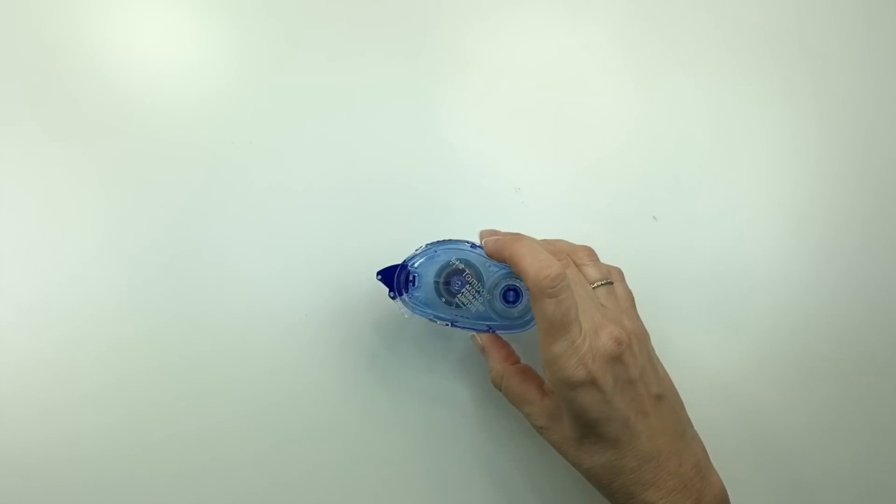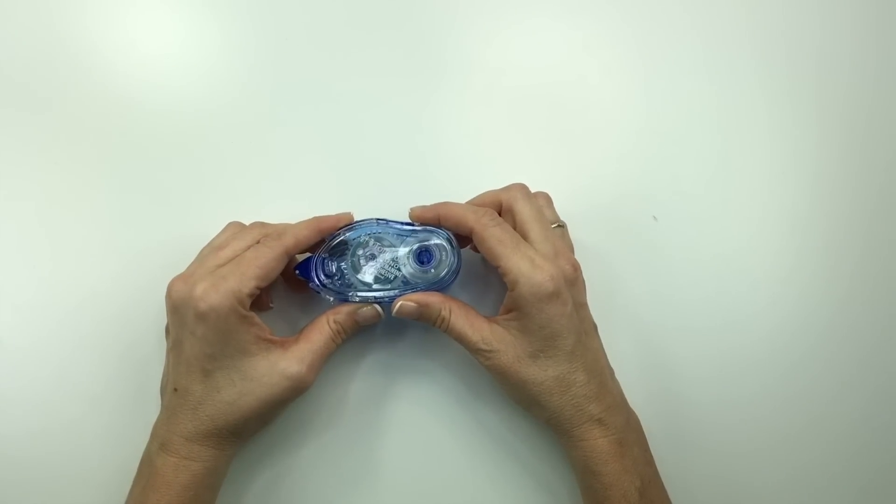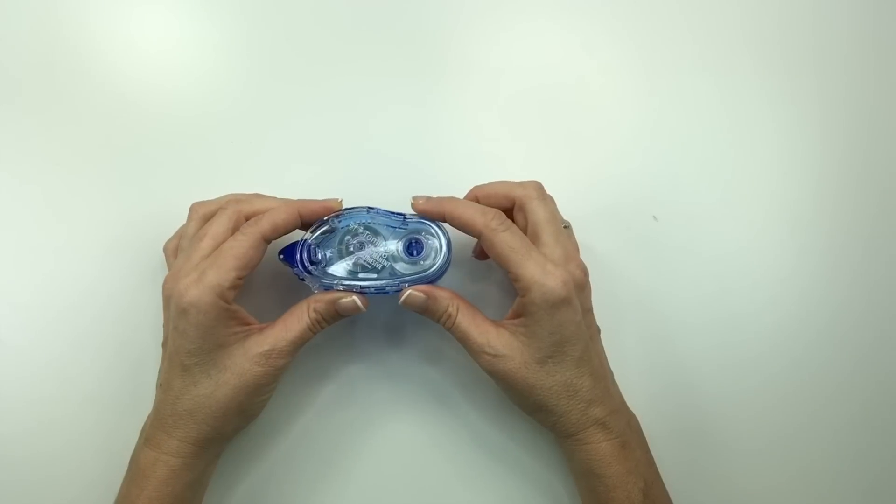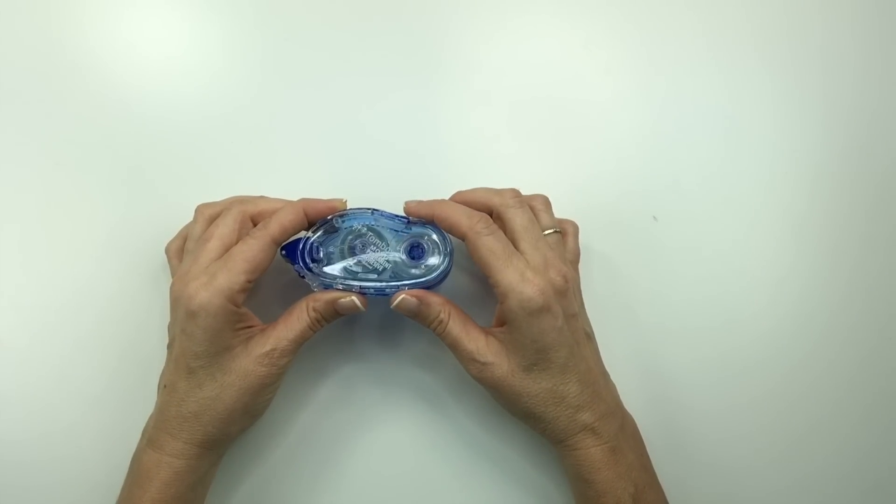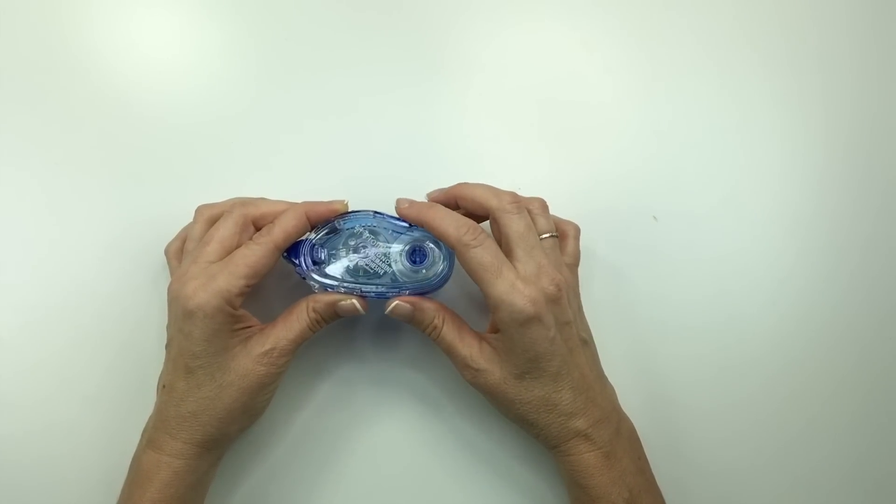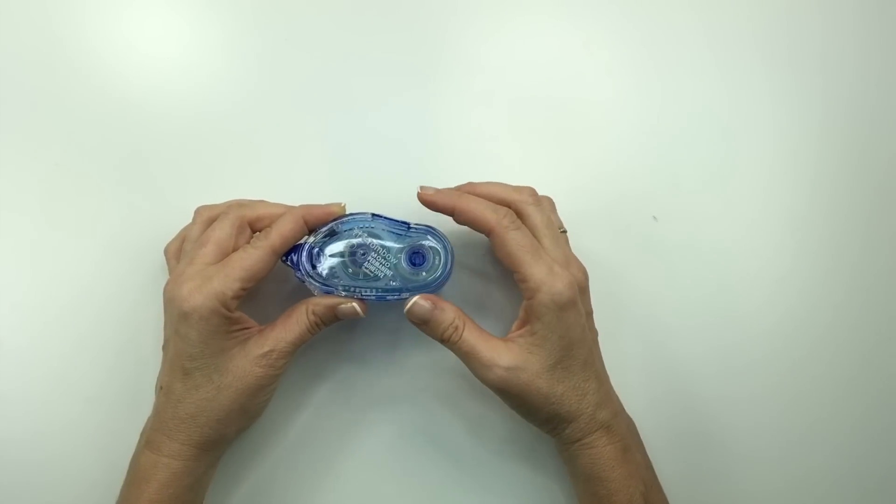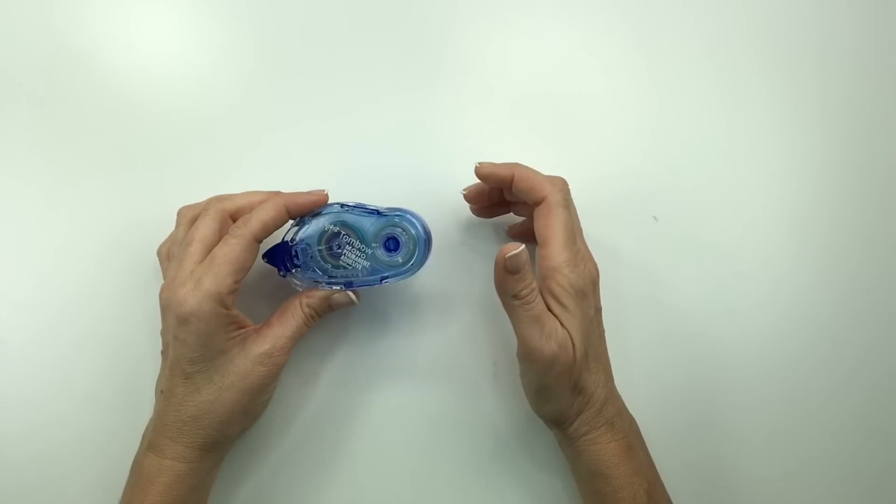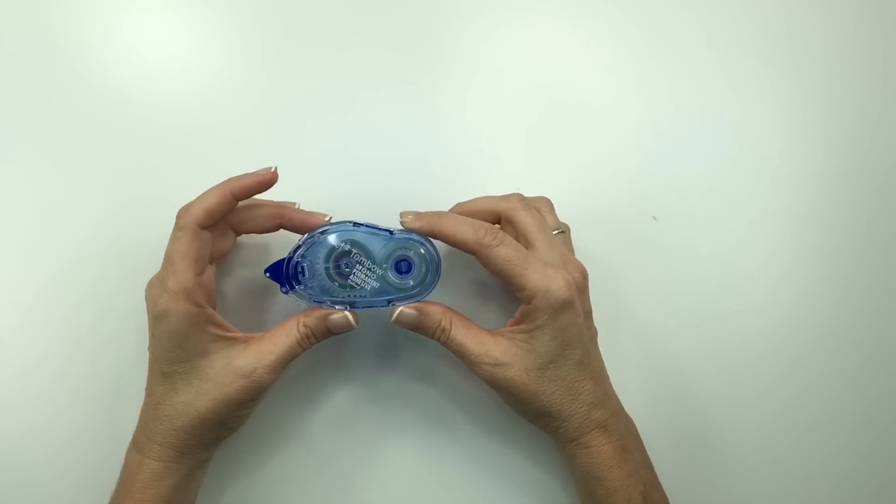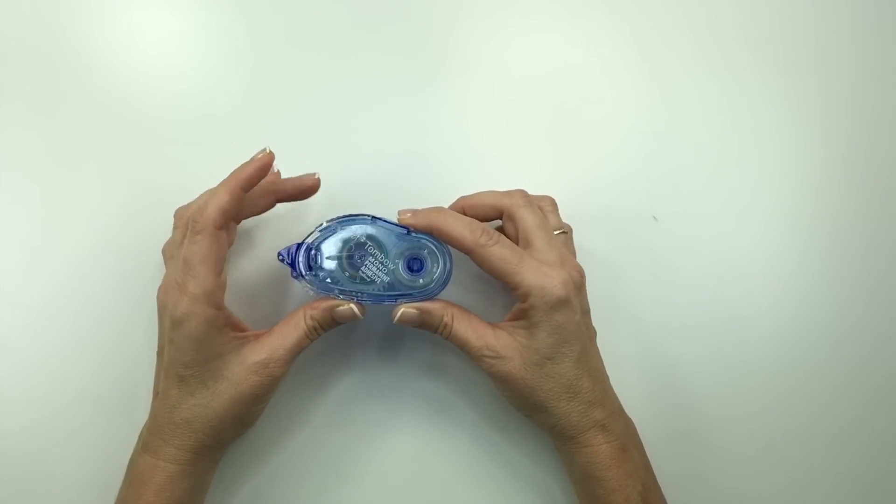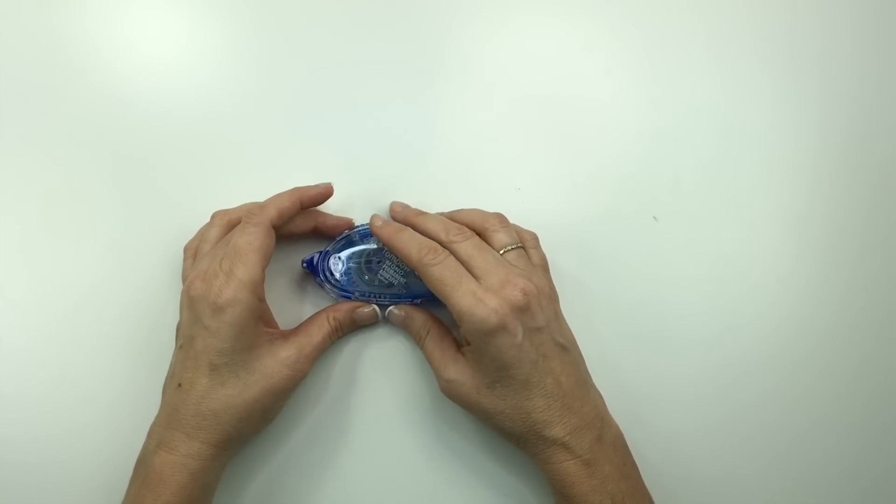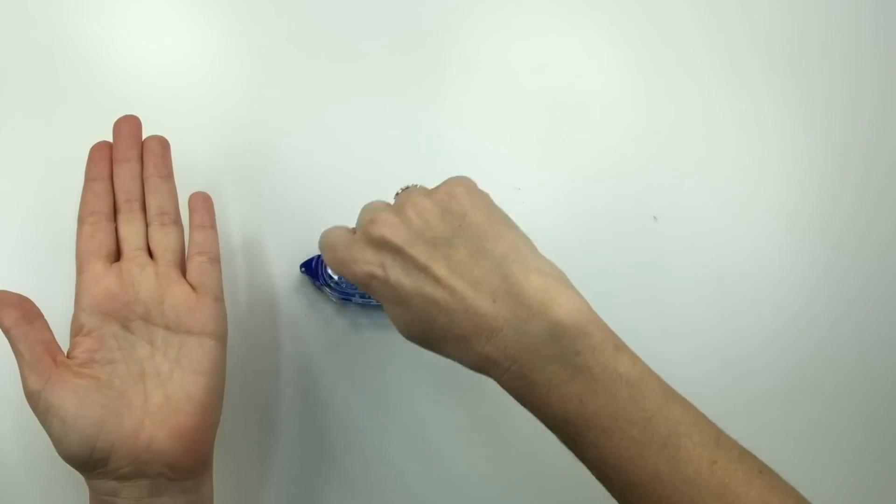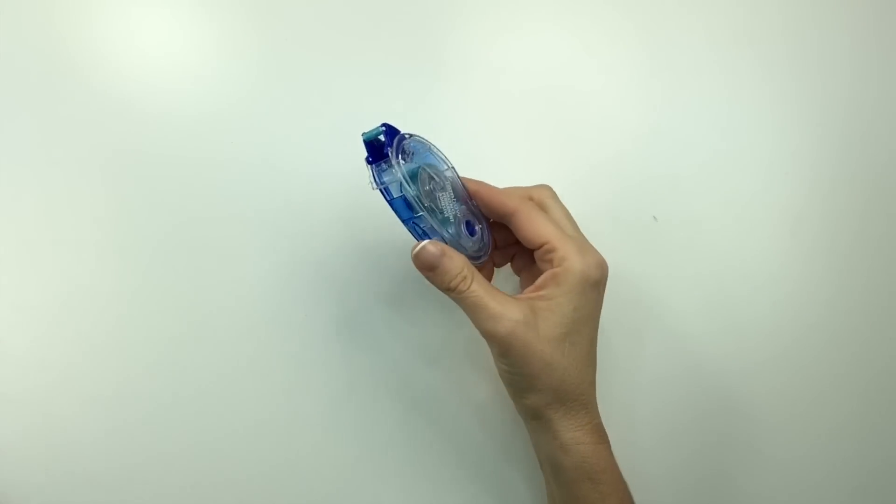The second adhesive I recommend is a Tombow mono adhesive. This one is a permanent. I'm not sure I recommend this one. I will link both the permanent and the temporary in the description box below. I kind of wish I got the temporary because this one's a little bit, well, it's permanent. So if you make a mistake, and you'll see in one of my last videos I did, so I think temporary would probably be better. But this one is good for if you're planning and you have two pages that you want to stick together, you just run it along the edge, and then you just stick them together. It works very well. So I would recommend this.